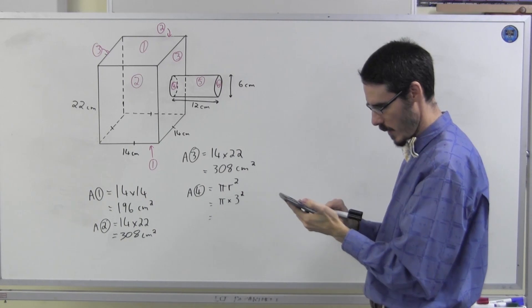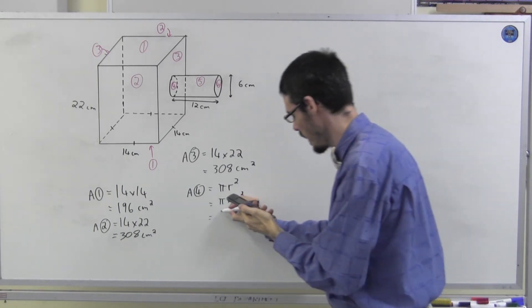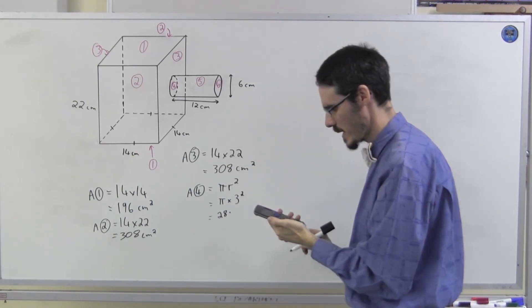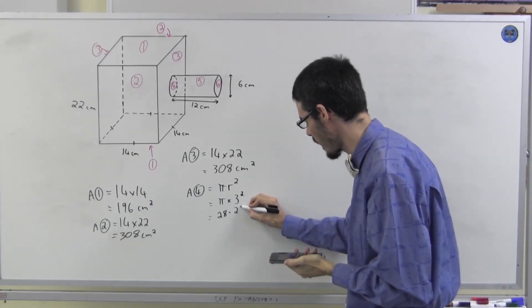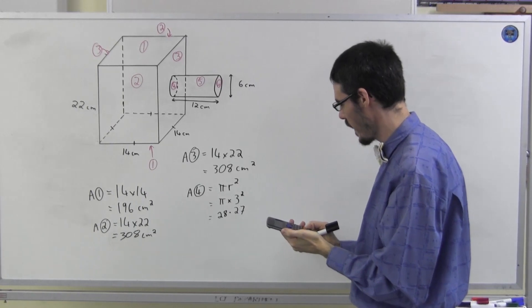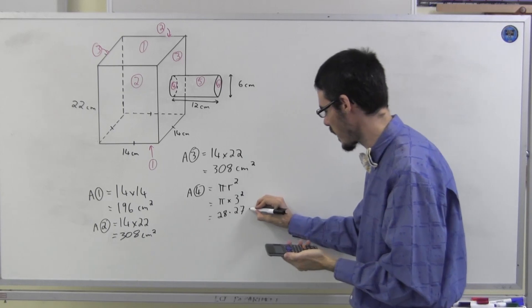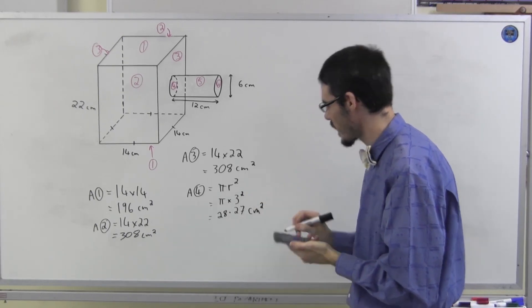Okay. π times 9 is 28 point... Oh, how many decimal places? Let's go for 2 again, our usual number. 27. It's 27.4, so I rounded it down to 27 square centimetres.